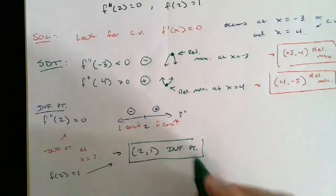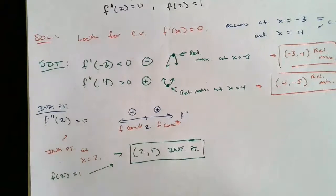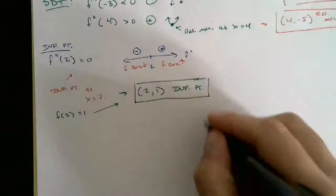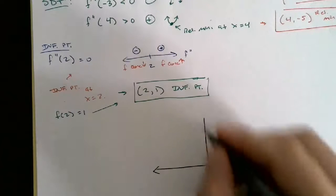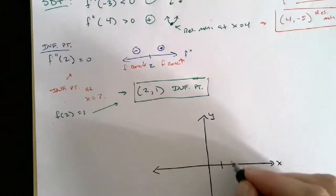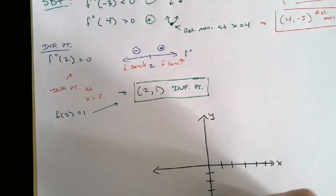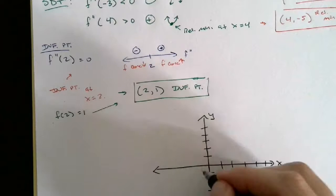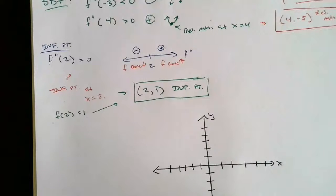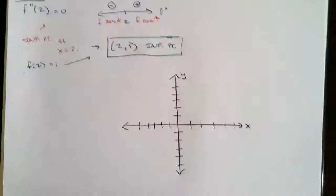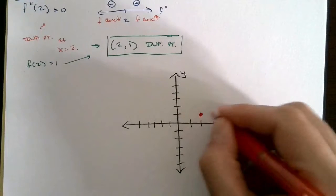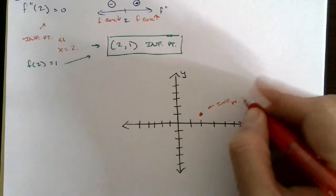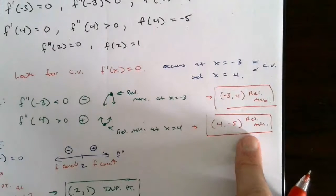Since they didn't give us any more information, we just have to make sure the given properties are present in our sketch. I'll set up x and y axes and plot the points I know. We have an inflection point at (2, 1), a relative max at (-3, 4), and a relative min at (4, -5).